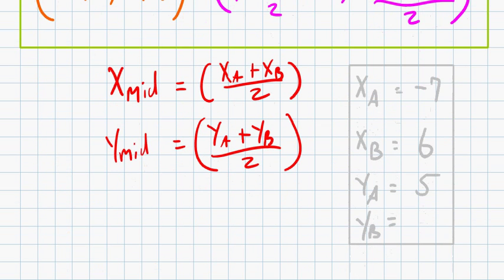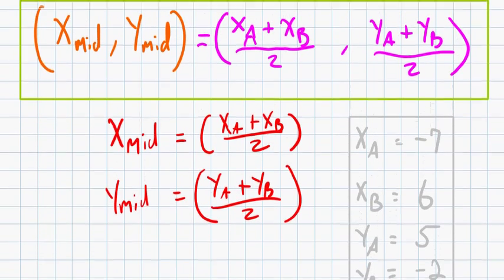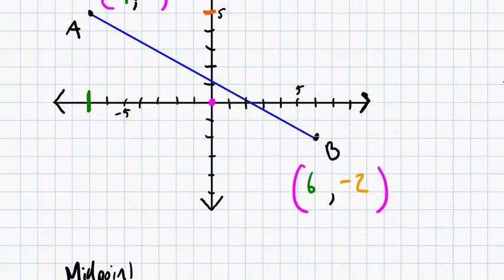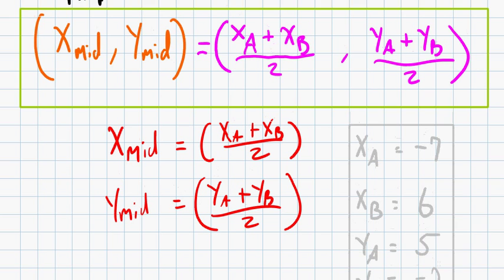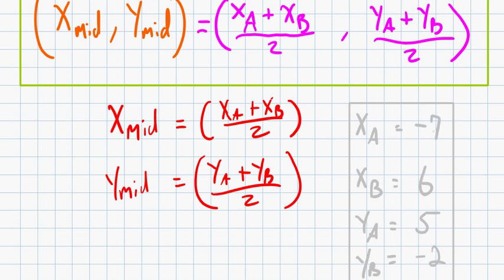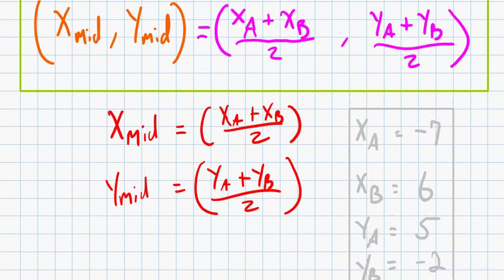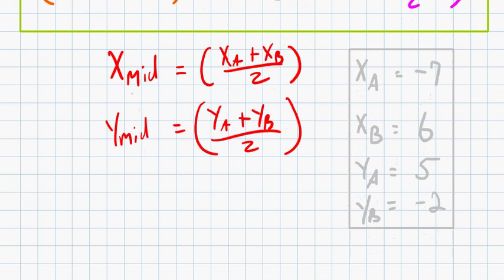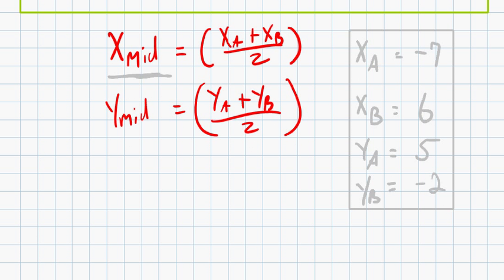Great! Now I have everything I need. All my information is right here. I don't have to go scrolling up and down between the graph and my table of information here. I can just use the information in this table and the information in my equation to find the midpoint. So, to find the x-coordinate of the midpoint, by plugging in my values here. Let's use blue.